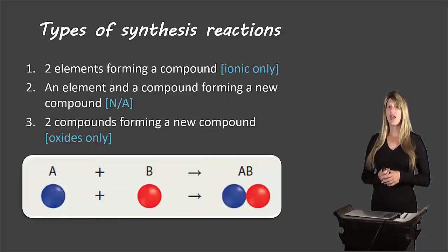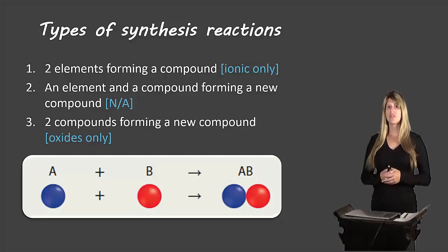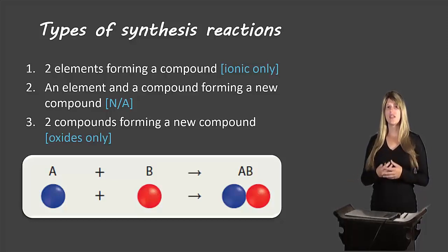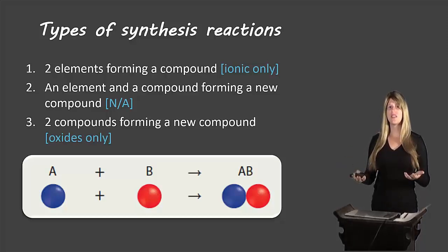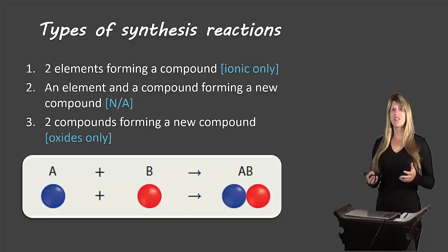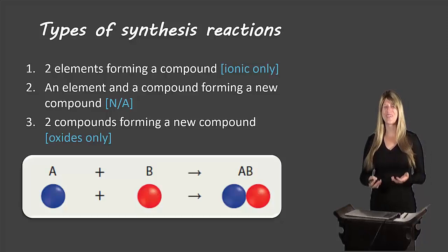There are three types, but we're only going to look at two of them and only certain circumstances of those two. Many synthesis reactions have multiple possible products, and you need chemical analysis to determine which compound has formed. Since we're doing this on paper rather than in a lab, we'll skip those and focus on the ones where we know for sure which compounds are being formed.